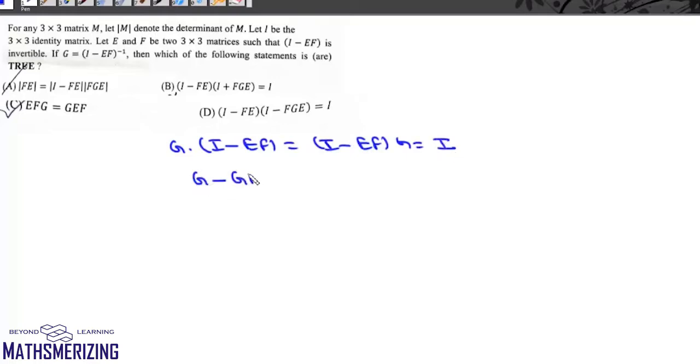So we can write G minus GEF will be equal to G minus EFG, and it should be equal to I. Now we compare these two, then we can have this result C, which is EFG is equal to GEF.